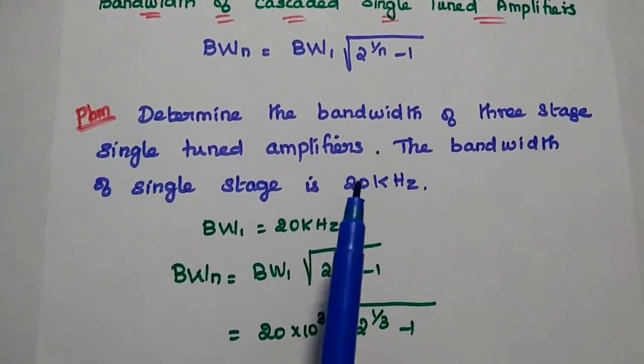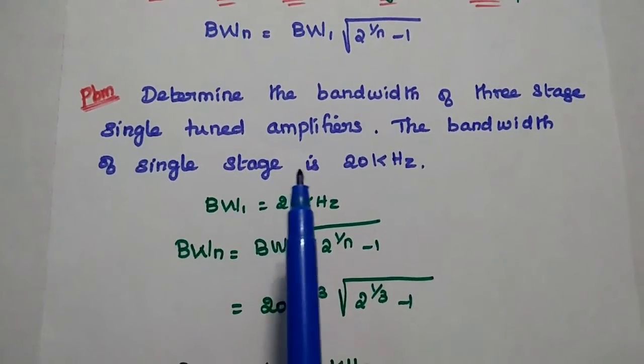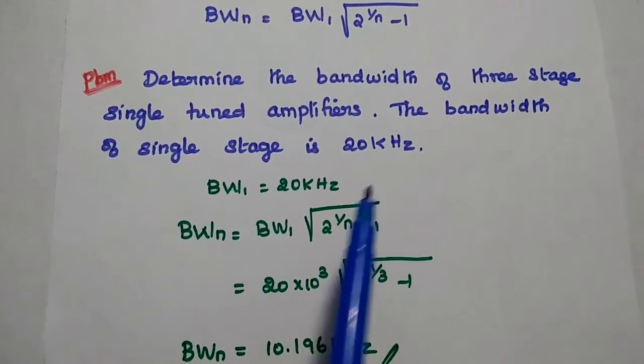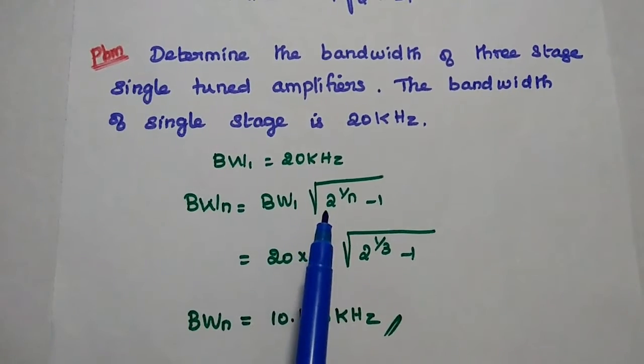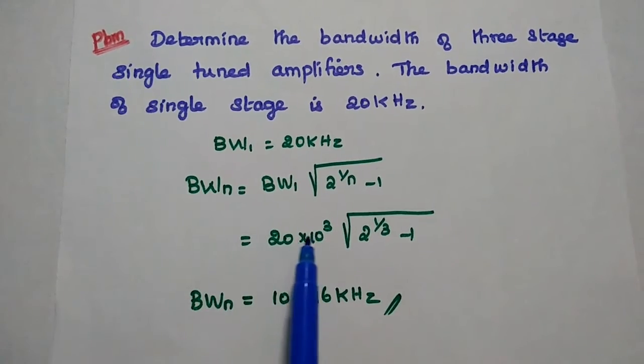So here the problem: Determine the bandwidth of the 3 stage single tuned amplifiers. Here the bandwidth of a single stage is 20 kilohertz. So we have to substitute this value in this formula BW1 into square root of 2 power 1 by N minus 1. Here BW1 value is 20 kilohertz.